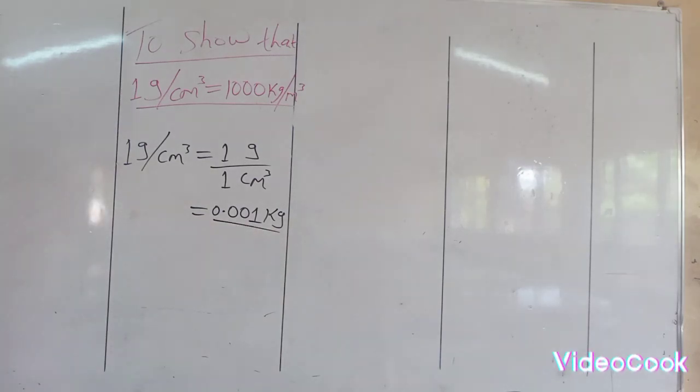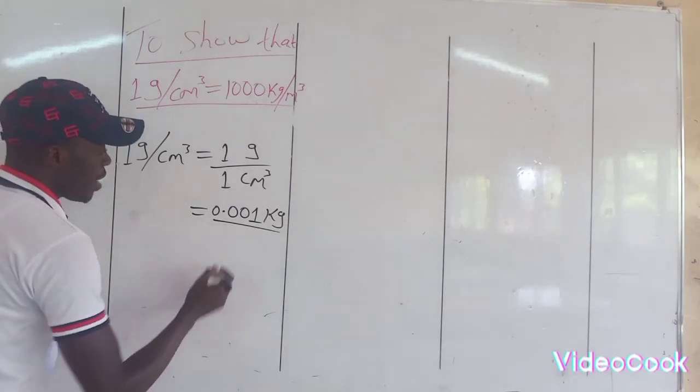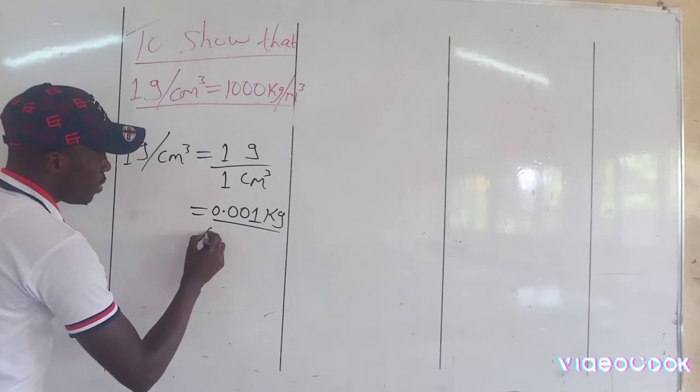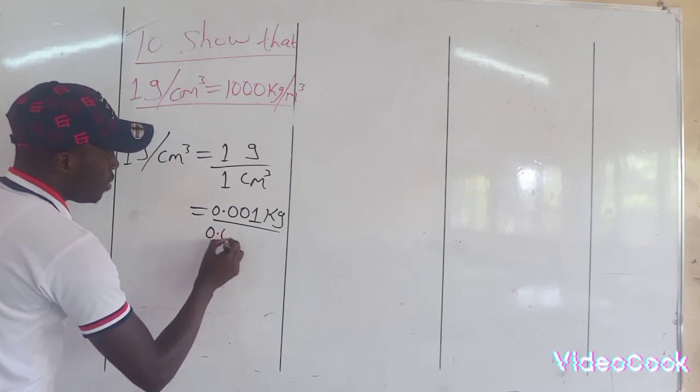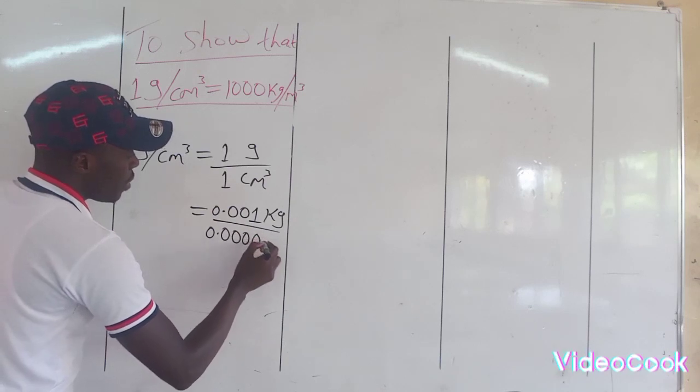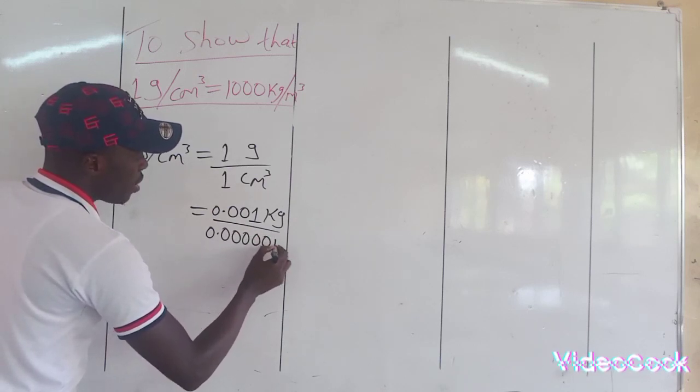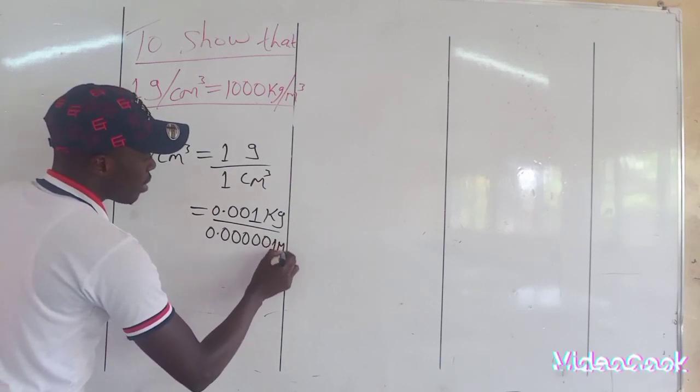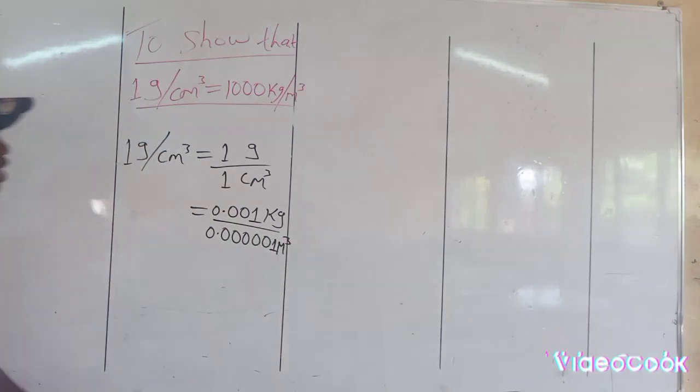And then if we convert cubic centimeter into cubic meter, this implies 0.0000001 cubic meters. I know somebody would wonder how we are getting 0.0000001 cubic meters.